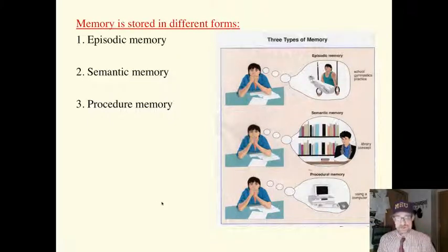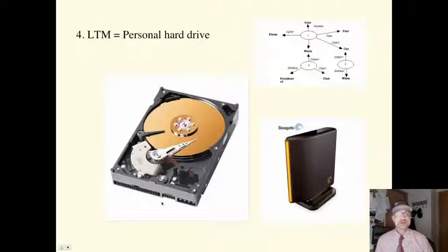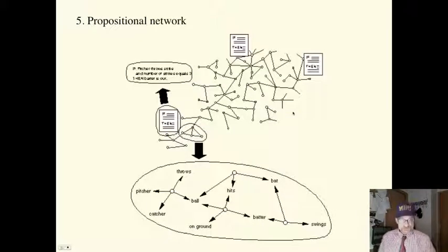Long-term memory is like a huge disk drive - everything you've ever encountered is contained here. We talked about propositional networks. It's stored there in propositions - thousands and thousands of them. A proposition is the smallest unit of knowledge or meaning that can be judged true or false. When we get new information, this propositional network expands and increases.